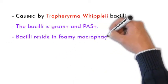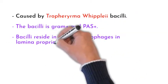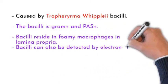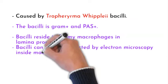The bacilli are located in foamy macrophages in lamina propria and can be detected by electron microscopy inside macrophages.